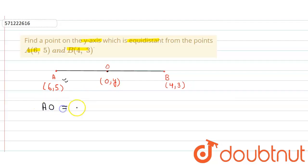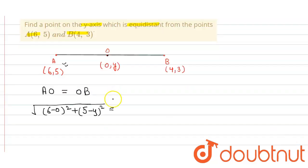We know that AO is equal to OB. The value of AO, which is the distance between A and O, will be equal to: square root of (6 minus 0) whole square plus (5 minus y) square is equal to...